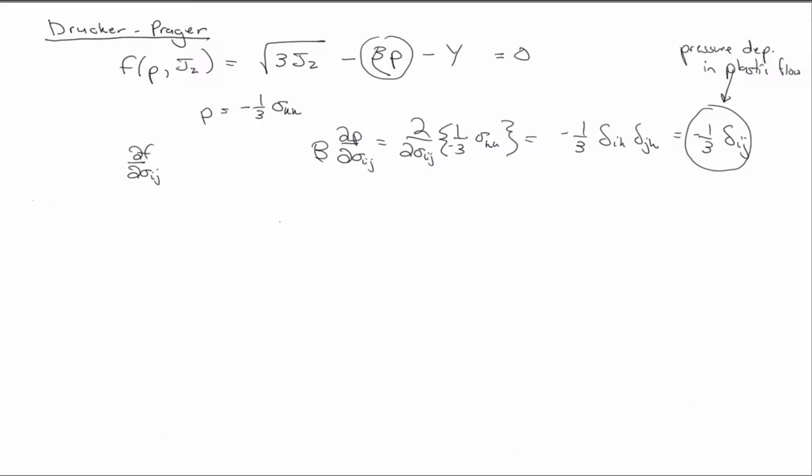The Drucker-Prager is a pressure-dependent J2-type surface, so you might imagine that we have something analogous, a pressure-dependent type surface that compares or is analogous to the Tresca criterion. And that we do, and it's called the Mohr-Coulomb yield surface.